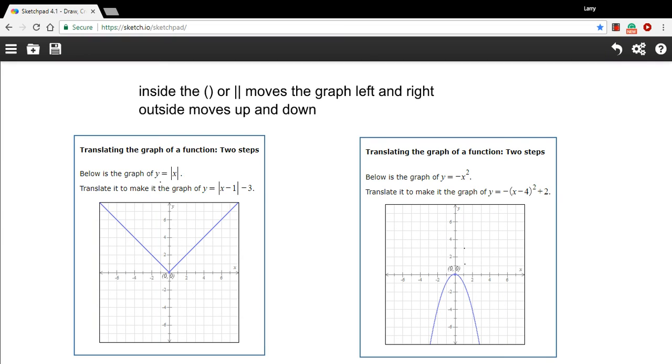In these problems we're being given the graphs of some basic functions and asked to translate them into new functions. We want to draw the graph for these changed functions, and what's happening on both of these is that there's a change that happens inside either the parentheses or the absolute value symbol, so here's a minus one inside the absolute value symbol, and a change outside, so here's a minus three.